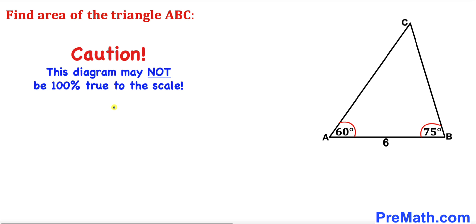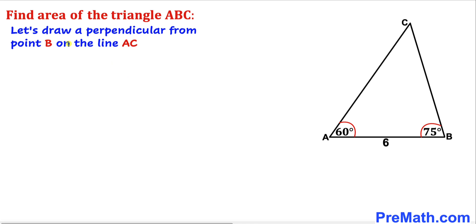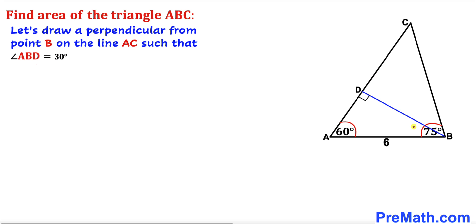Let me make it very clear that this figure may not be 100% true to the scale. Let's get started. Here's our very first step: let's draw a perpendicular from point B onto line AC. I'm going to draw this perpendicular. This is a 90 degree angle, and here's our much nicer looking diagram.